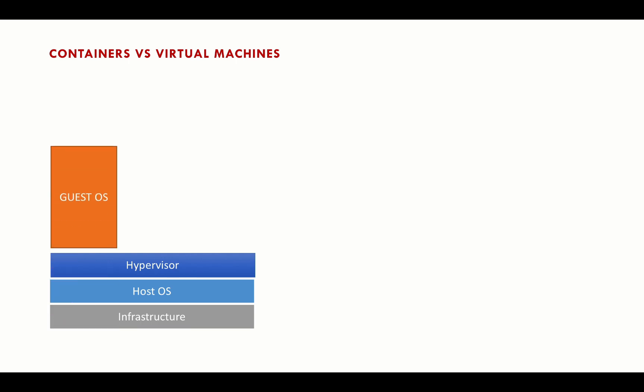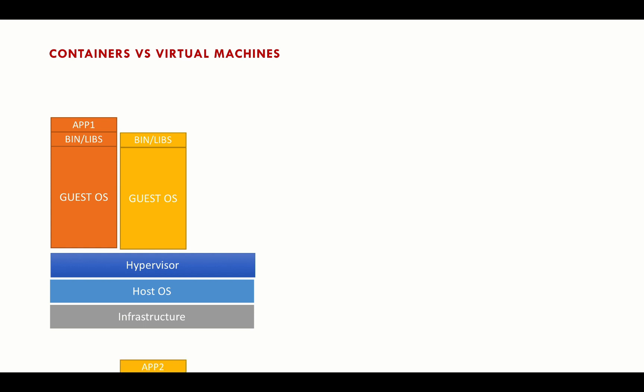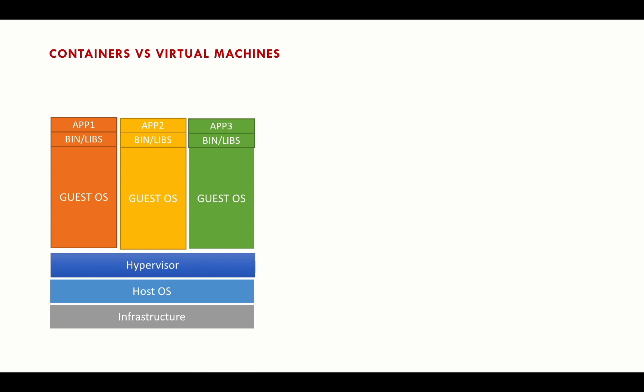On top of the hypervisor you can have multiple guest operating systems, for example a Linux OS. Every operating system needs some binaries and library files. On top of that we have applications — say App 1 could be a MySQL server, App 2 running on a Solaris guest OS with its own binaries and library files, and then App 3.